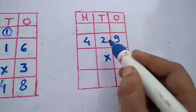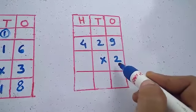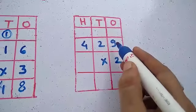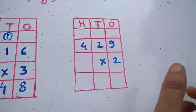Now next example. 429 multiply 2. 2 into 9 first. Then 2 into 2. Then 2 into 4.